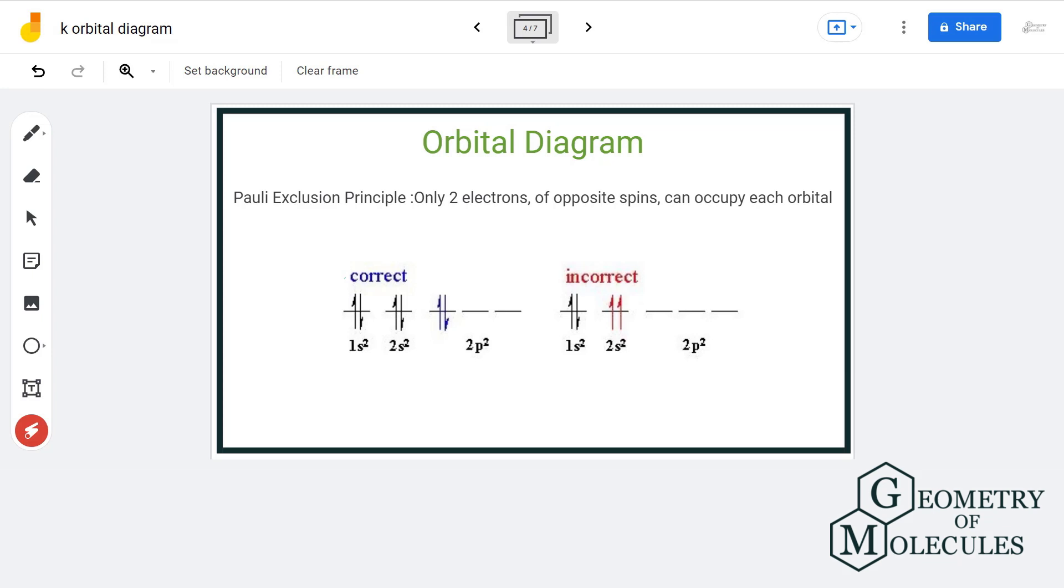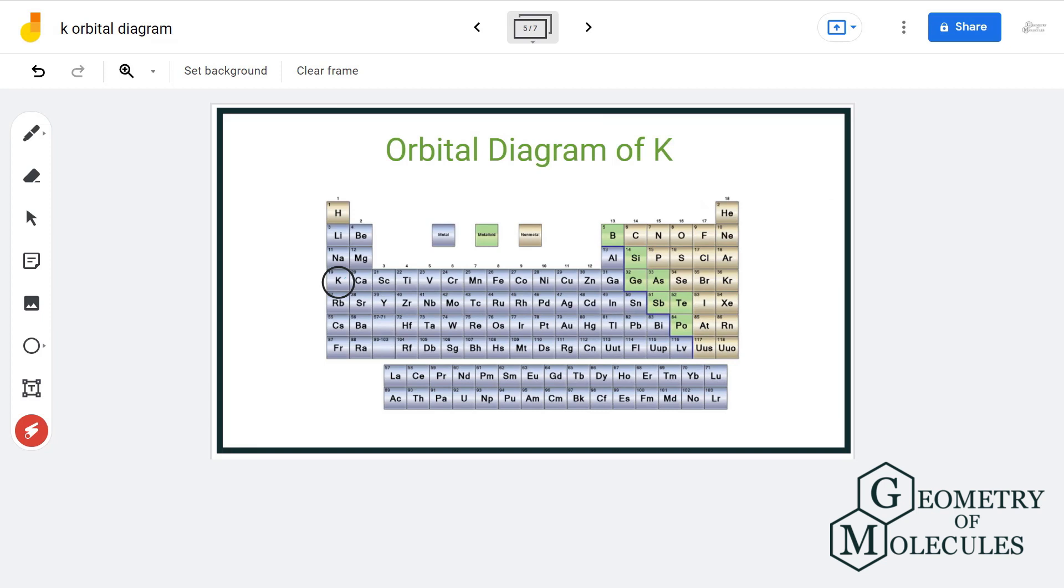Now that we have discussed the basics that we should know for orbital diagrams, let us move ahead and draw one for potassium. Now potassium is an s block element and has an atomic number of 19. That means that it has 19 protons and 19 electrons.